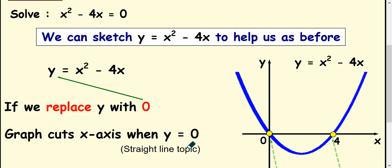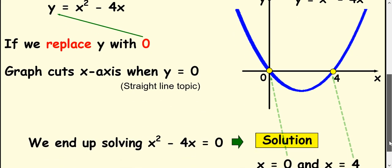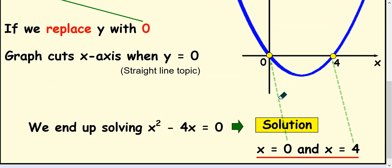We talked about that in the straight line topic. And you can see here that it cuts the x axis at two points, zero and four. And that's actually the solution to the equations. The equation solutions are where the graphs cut the x axis, zero and four.